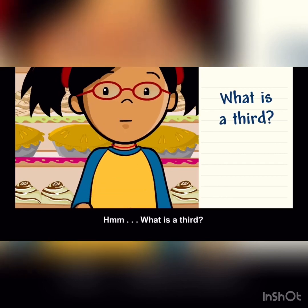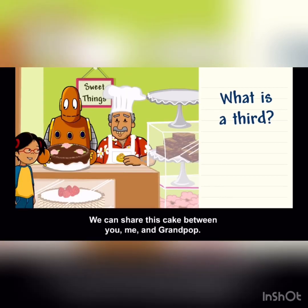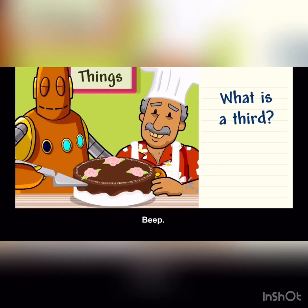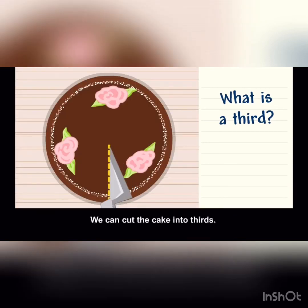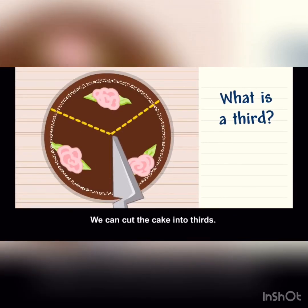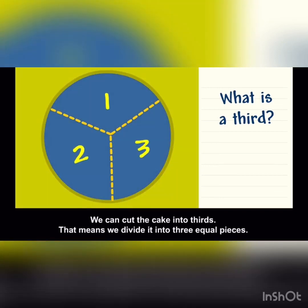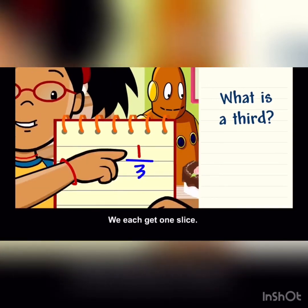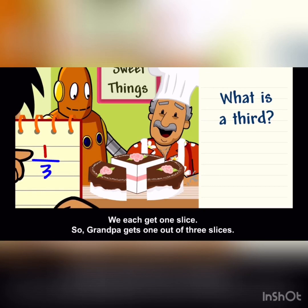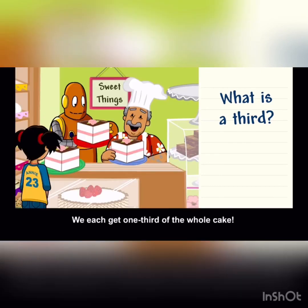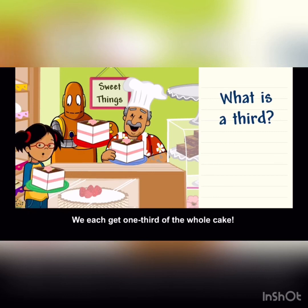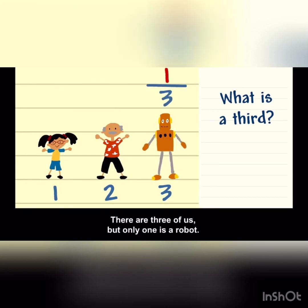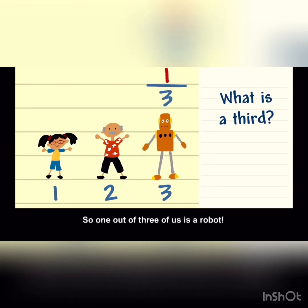What is a third? We can share this cake between you, me, and Grandpa. We can cut the cake into thirds — that means we divide it into three equal pieces. We each get one slice. So Grandpa gets one out of three slices. We each get one third of the whole cake. There are three of us, but only one is a robot, so one out of three of us is a robot.